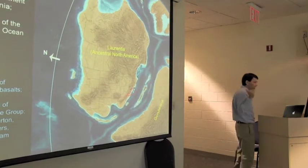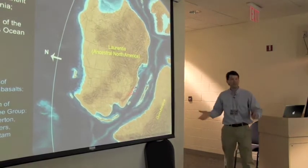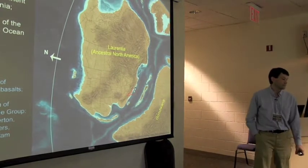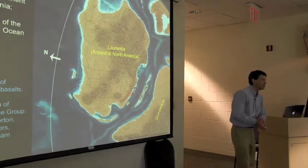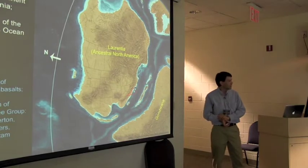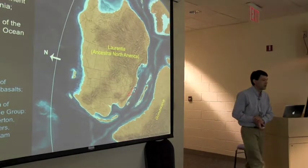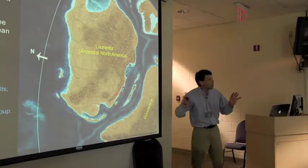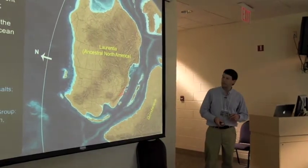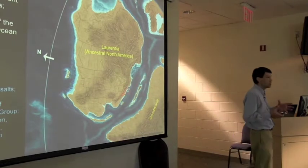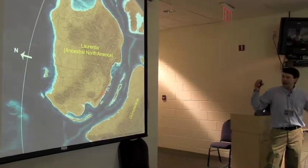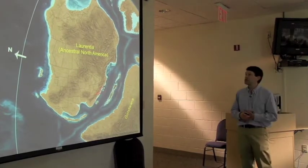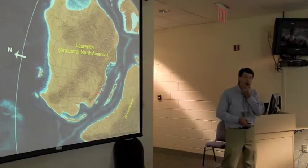These images all came from a fantastic suite of paleogeography images put together by a guy named Ron Blakely at Northern Arizona. Yeah, he retired. But these are great. And I steal them all the time and then modify them as I see fit. But I think they do a really good job of showing how things came together and how things changed through time, or at least our interpretation of what we think happened. So here we go.